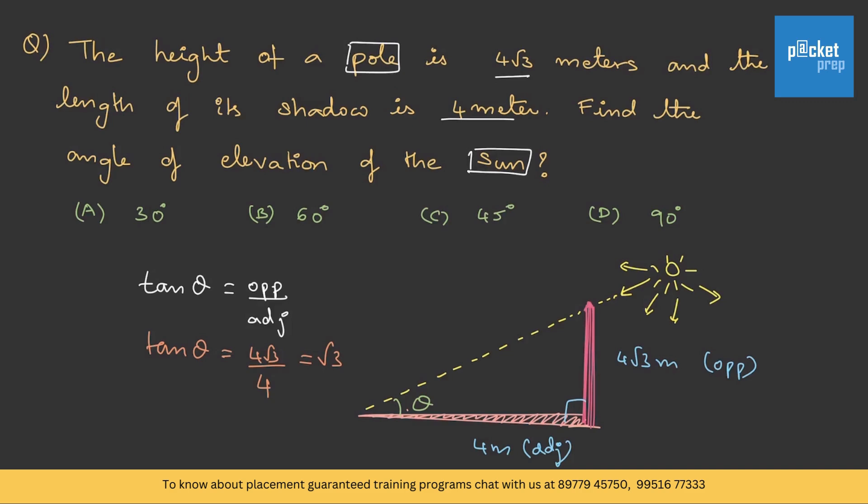Just think about the trigonometric ratios. For what angle we get the answer root 3? The angle is 60 degrees, tan 60.